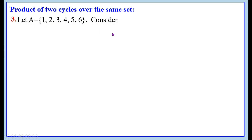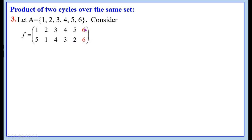Consider the permutation f equals to the two-row notation with top row 1, 2, 3, 4, 5, 6 and second row 5, 1, 4, 3, 2, 6. Here 6 is an identity permutation, highlighted in red, and hence this can be written as a product of cycles.